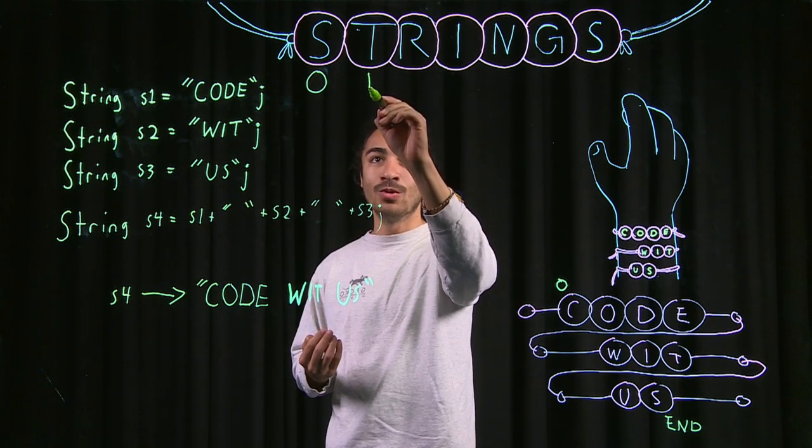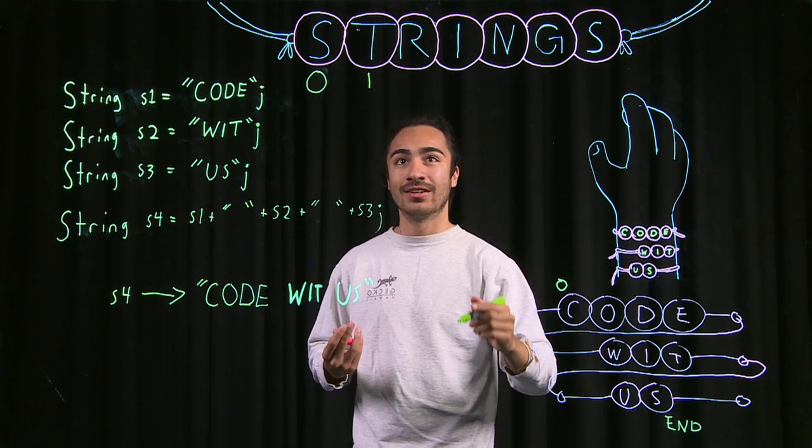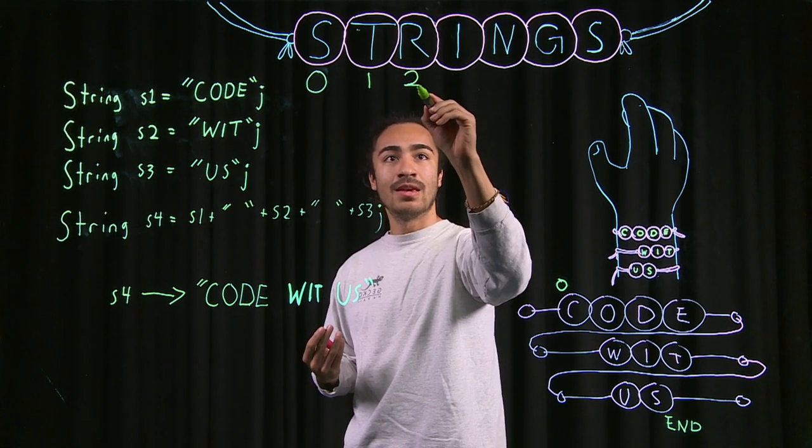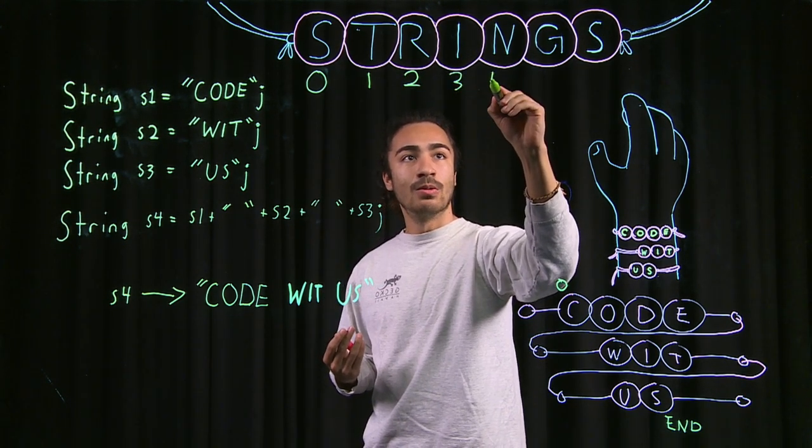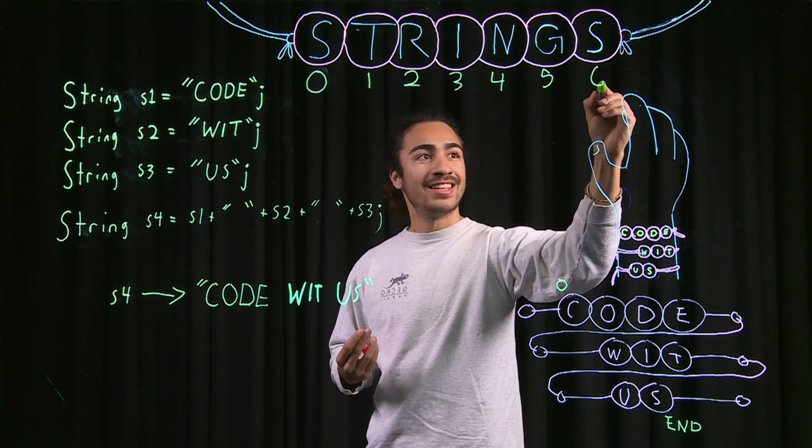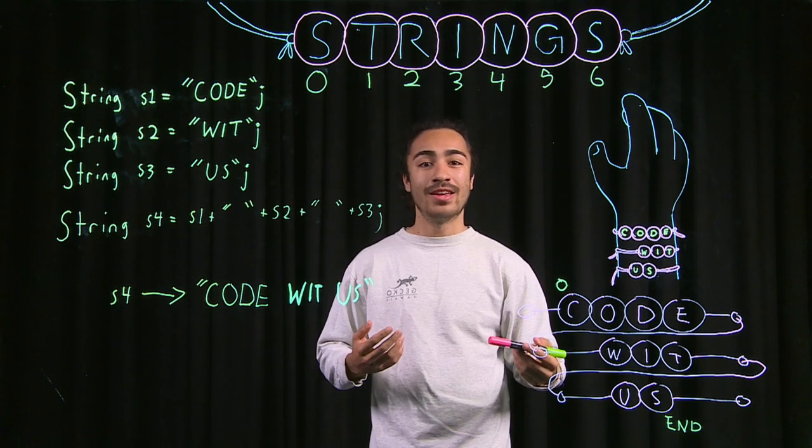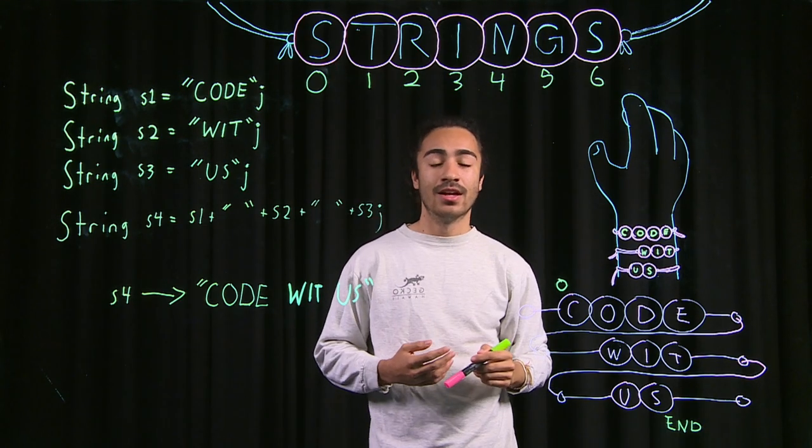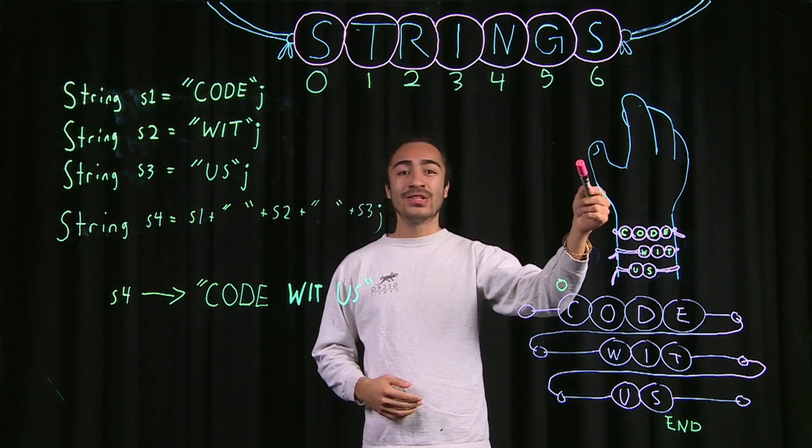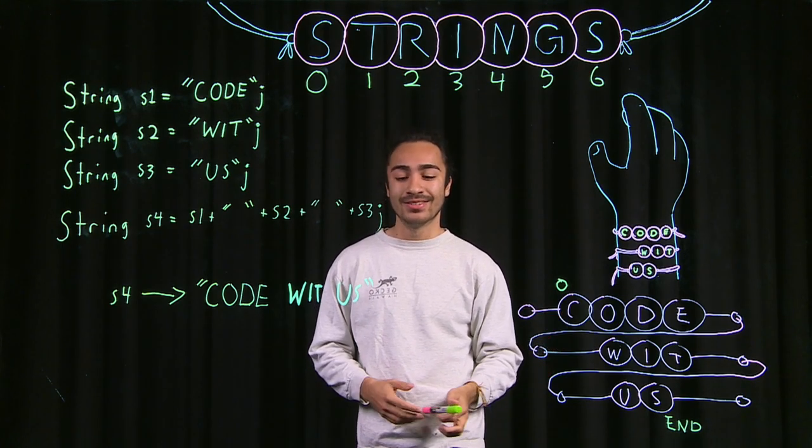The second character is one index away, or one bead away from the first character. If you keep doing that, we will find out that our S is the sixth index, six beads away from our first character. This numbering scheme is very important once we get into string methods, which I'll get into right now.